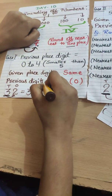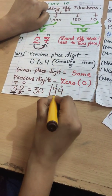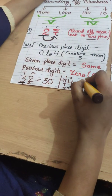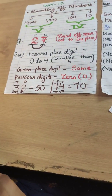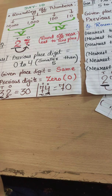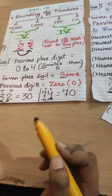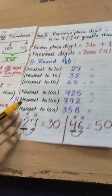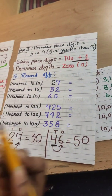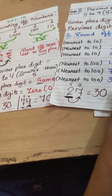One more example: 74 rounded to the nearest tens. The tens place digit is 7 and its previous digit is 4, which is smaller than 5. So 7 remains 7 and the rest become 0, giving us 70. Just keep in mind: if the previous digit is smaller, the given place digit stays the same. If the previous digit is greater than or equal to 5, the given place digit becomes one step greater.